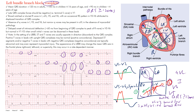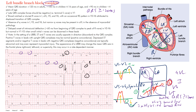Discordance means the main QRS vector goes in the opposite direction of the ST-T wave. Where the complex is mostly going down, you see ST elevation and an upright T wave; where it's going up, you see ST depression and an inverted T wave. This discordance is normal in the setting of a bundle branch block — the same applies to right bundle branch block. You can see this clearly in V2, and in V5 and V6 where the complex is positive followed by a negative T wave.